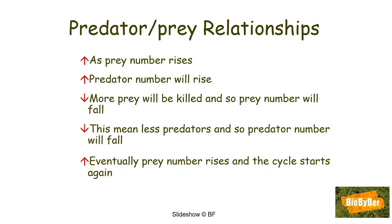In a nutshell: as the number of prey rises, predator numbers will rise. More prey will be killed, so prey numbers fall. This means less food for predators and so predator numbers also fall. Eventually, prey numbers rise again and the cycle starts over.